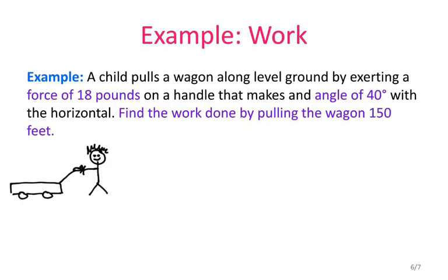So he's pulling the wagon. The force is 18 pounds. So this right here, we're going to say that that is 18 pounds. And the angle that the handle makes is 40 degrees. So this angle right here is 40 degrees. And we want to find the work done by pulling the wagon 150 feet. So we're taking this wagon in this direction 150 feet. Now that we have the visual, let's go ahead and start talking about the force and the position vector because we need to find both of those in order to calculate the work.